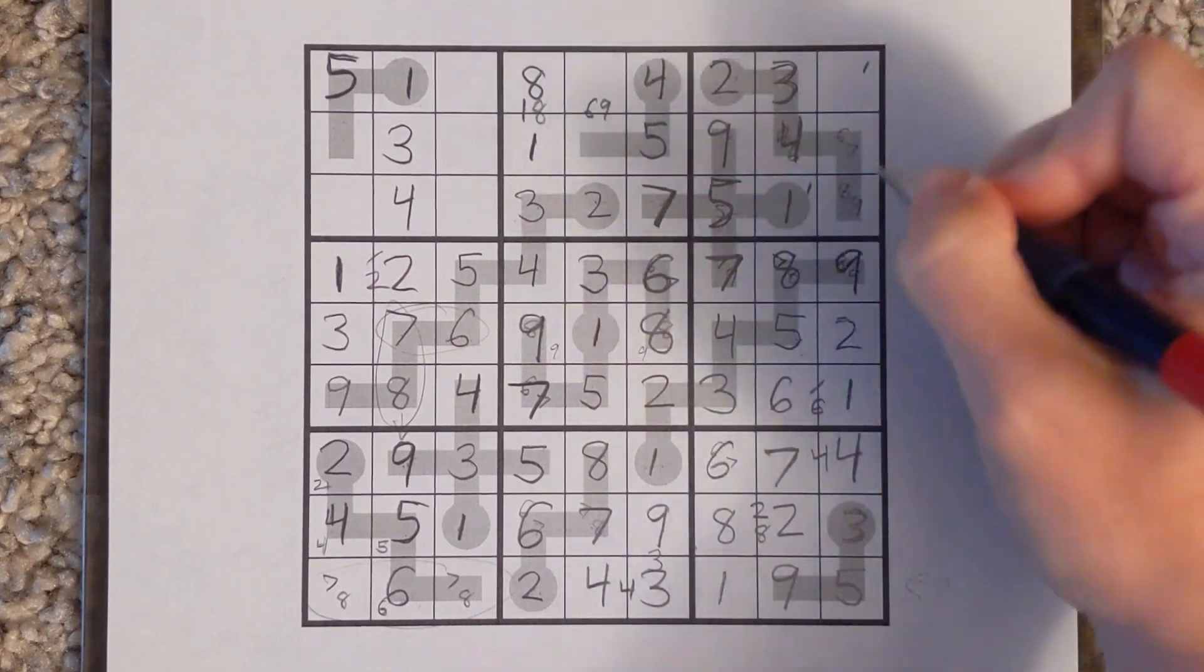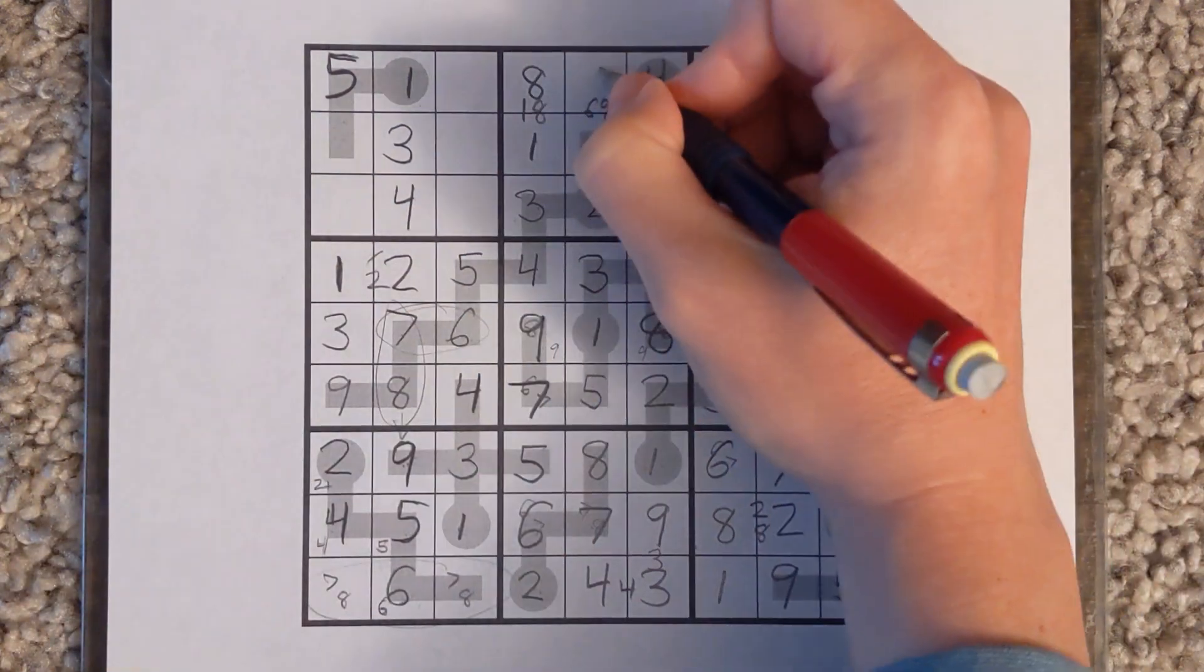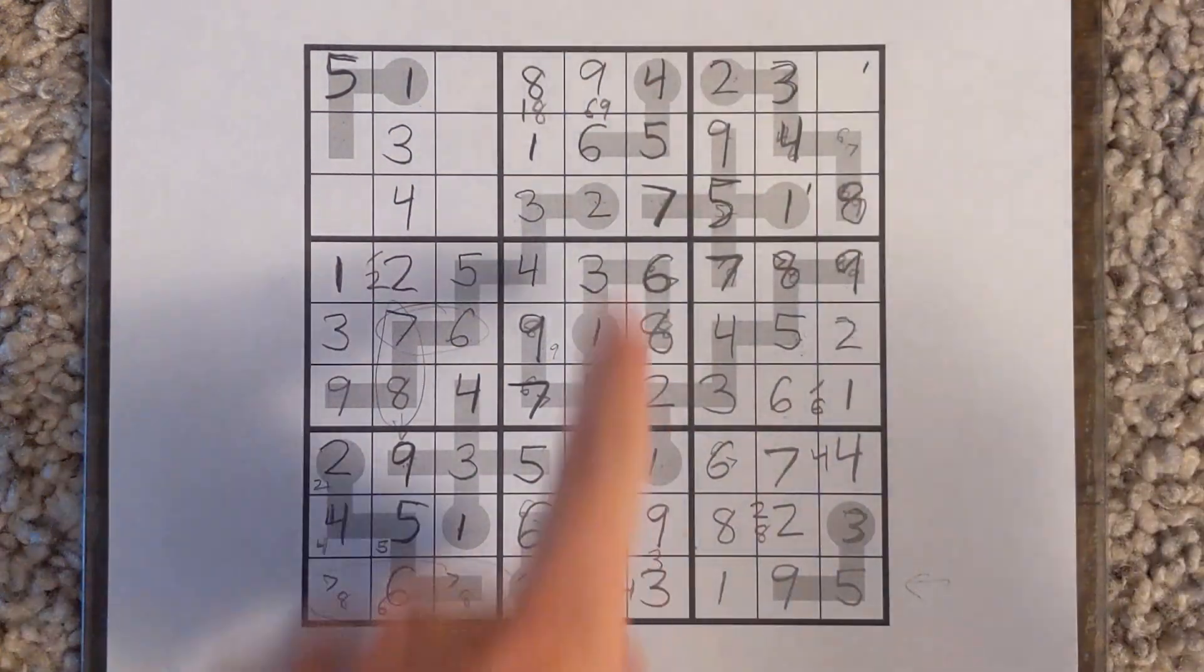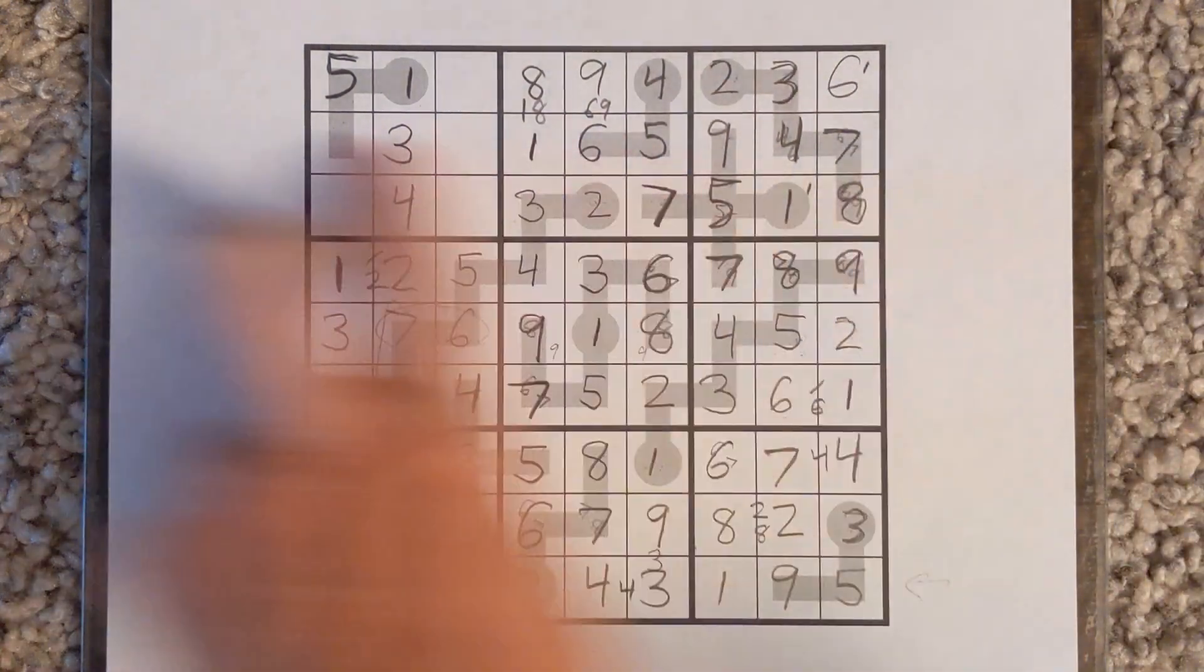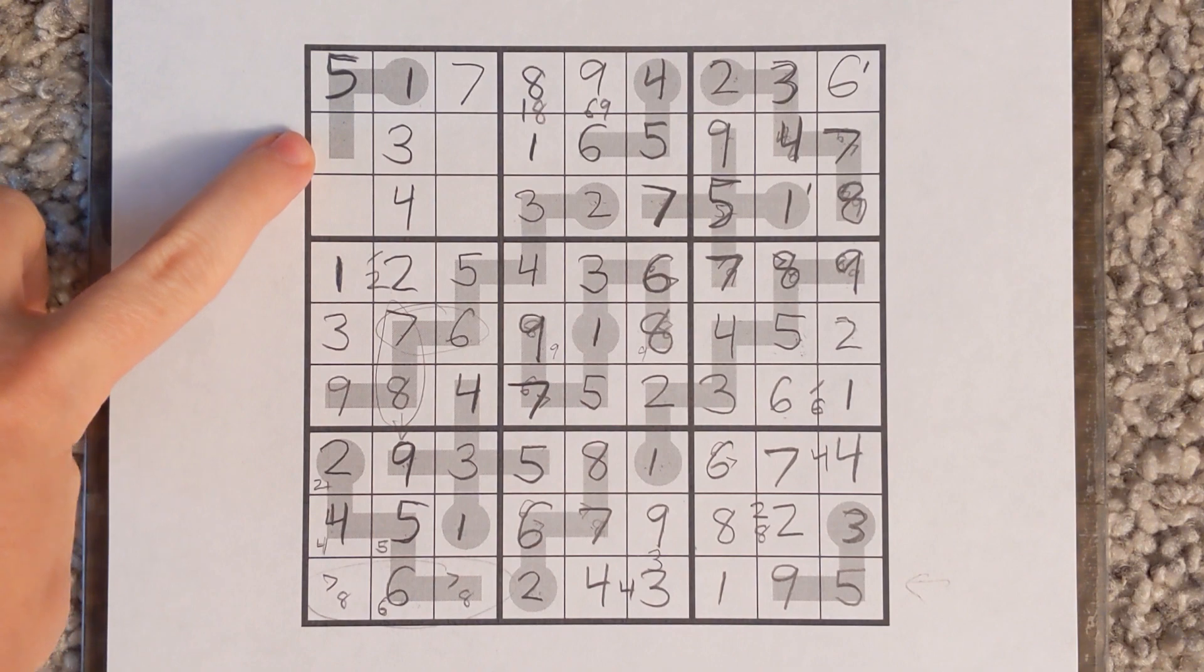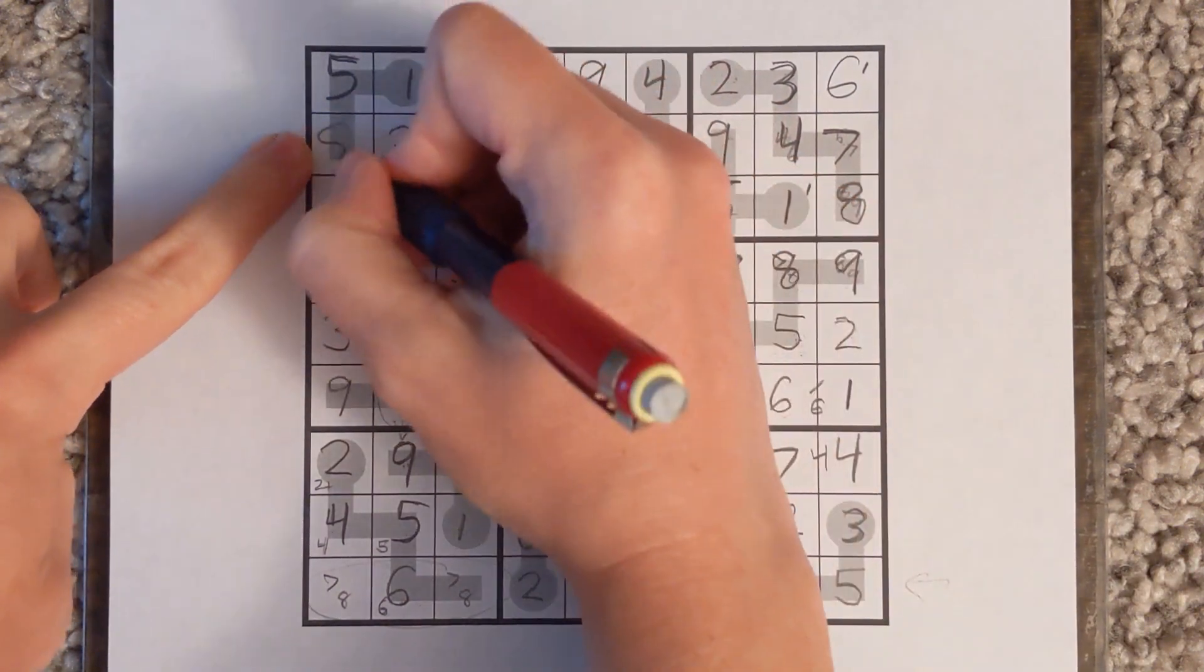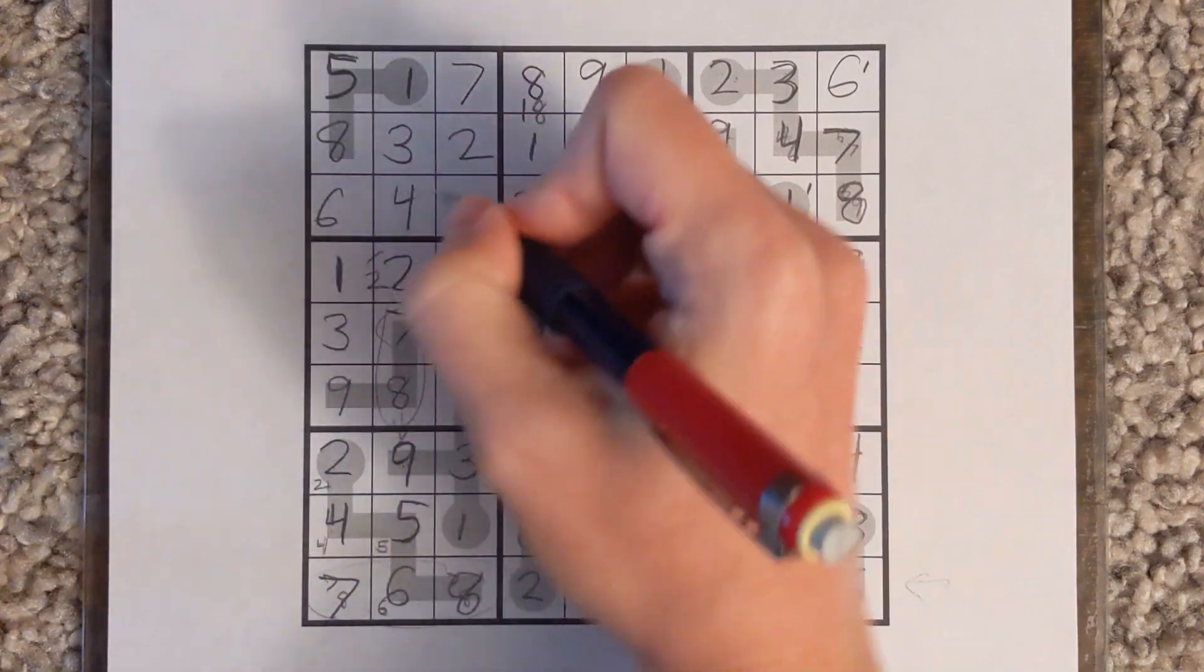This becomes 9, this is 8, 9 with 9 and 6. 6 comes over here, 6 and 7. The two 7s are the last place here. We have an 8 and a 2 to place. This is 2, 8. 8, 7. And the last digits are 6 and 9.